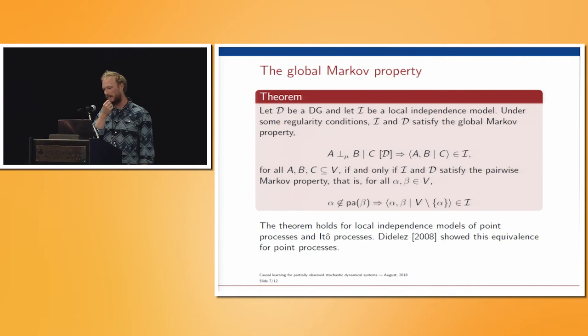A key result is then to show that we actually have the global Markov property in this local independence graph. Under some regularity conditions, one can show—and we do that in the paper, it's also reproducible because you can read the proof—that there's actually an equivalence between the pairwise Markov property and the global Markov property. This means that if I construct my local independence graph and I take my nu-separation criterion and there's a separation, then there's also going to be a local independence. We show this to hold for point processes and Ito processes, and these Ito processes being the new thing, as this was a known result for the point processes.